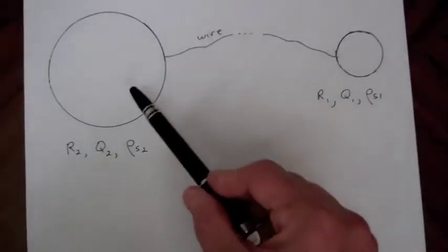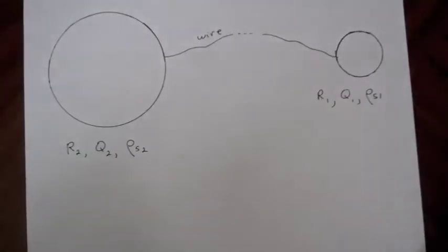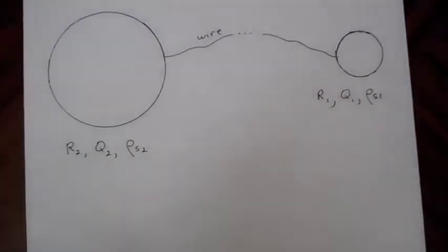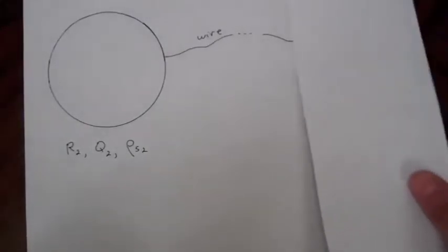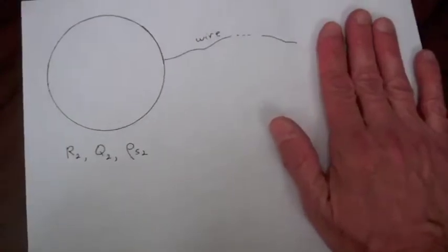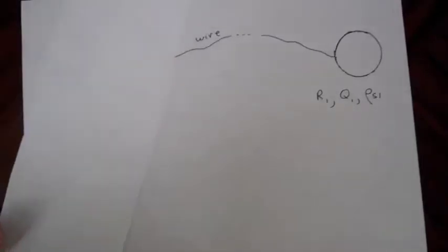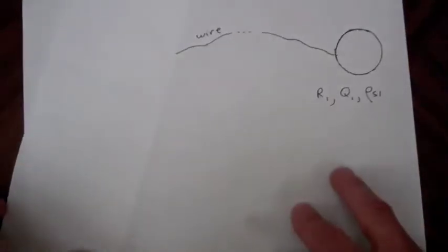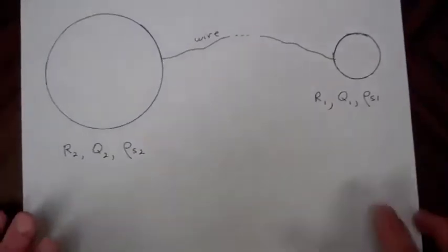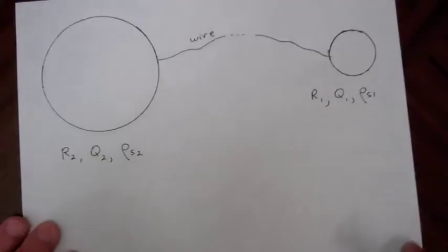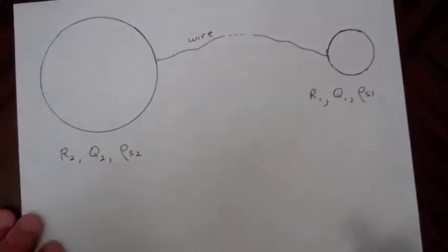We've separated sphere 2 and sphere 1 by a great distance, so the work to bring a charge from infinity to sphere 2 is independent of sphere 1. Similarly, the work to bring a charge to sphere 1 is independent of sphere 2. But because they're connected by a wire, the potential will be the same for both.